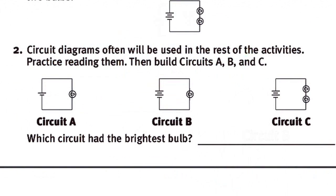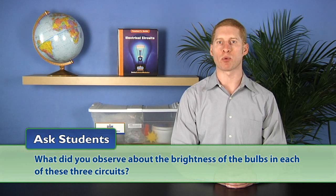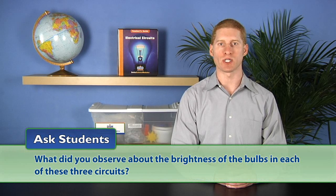Instruct students to construct these three circuits represented by the circuit diagrams. After students have finished assembling the circuits, ask, what did you observe about the brightness of the bulbs in each of these three circuits? Students should respond that each of the bulbs glowed at a different brightness.